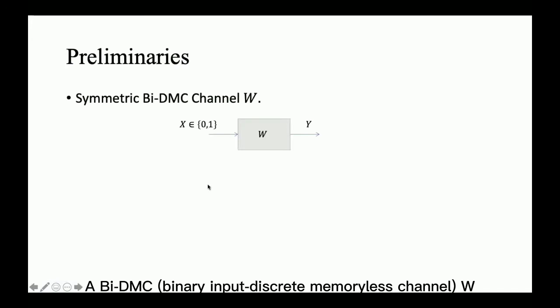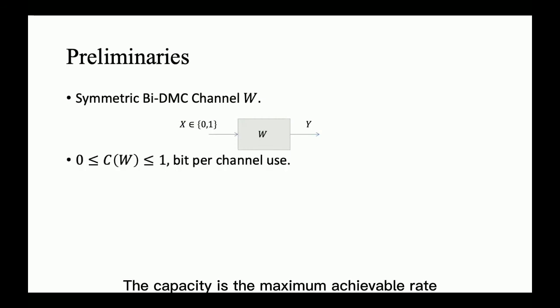A BI-DMC channel W looks as follows, where the input alphabet is binary, the output alphabet is arbitrary, and the channel is denoted by W. The capacity is the maximum achievable rate over a certain channel with an almost zero probability of error.